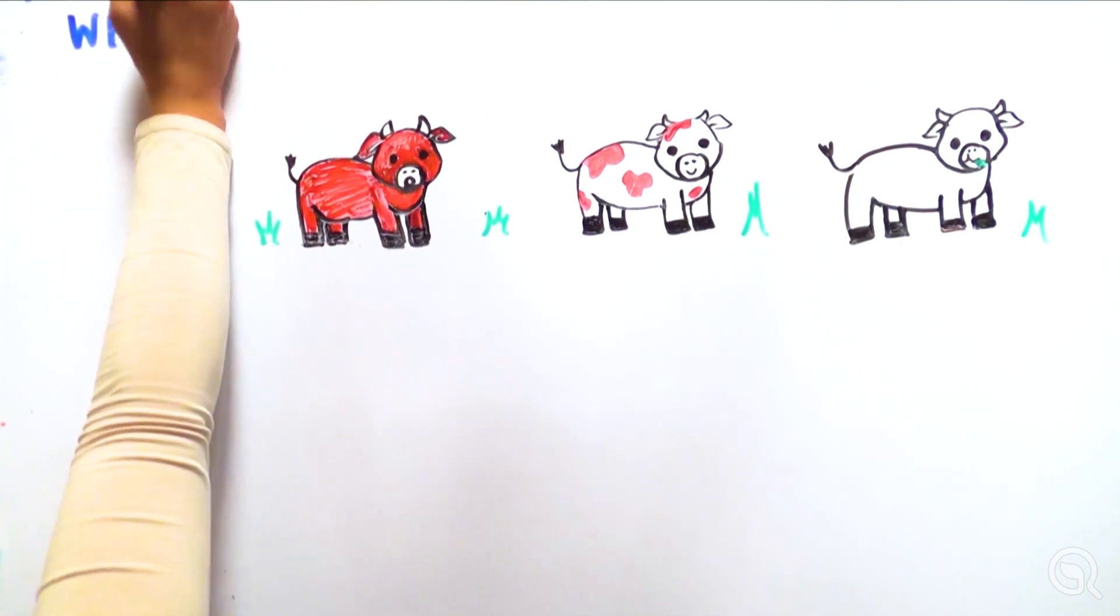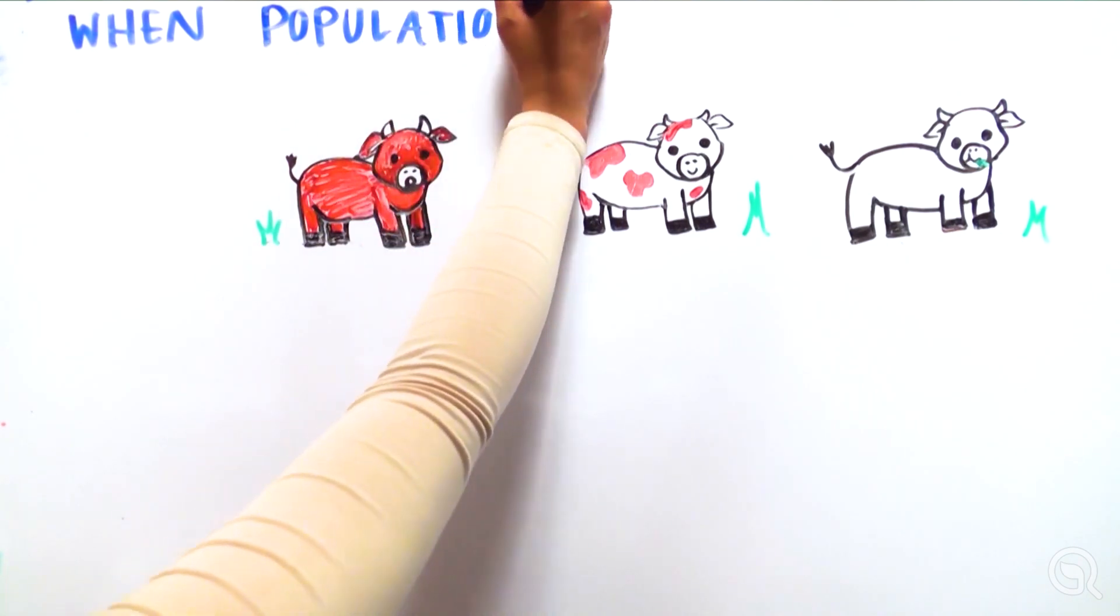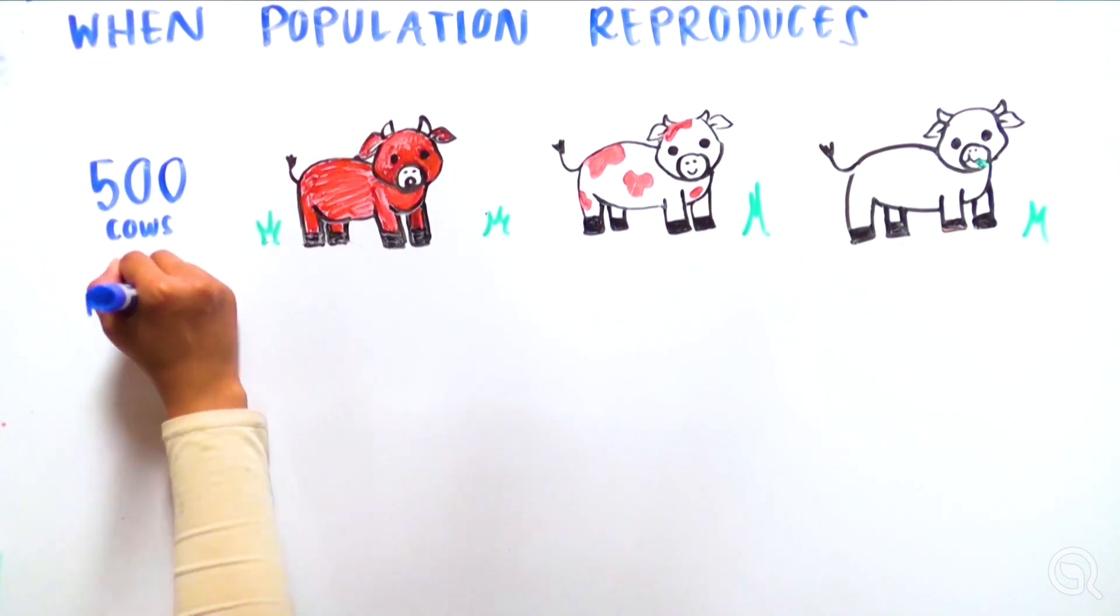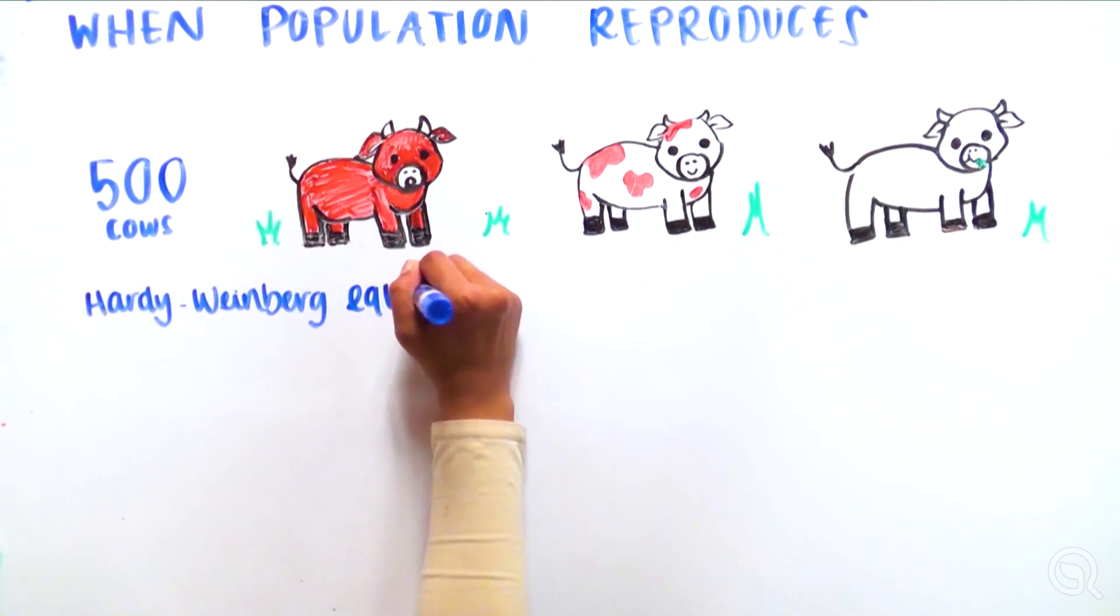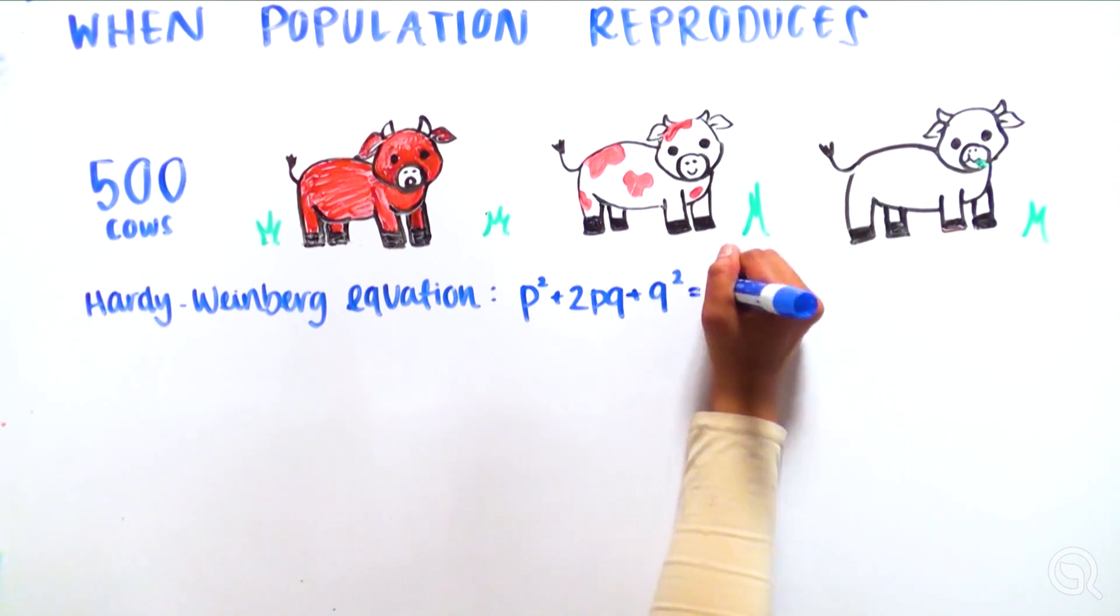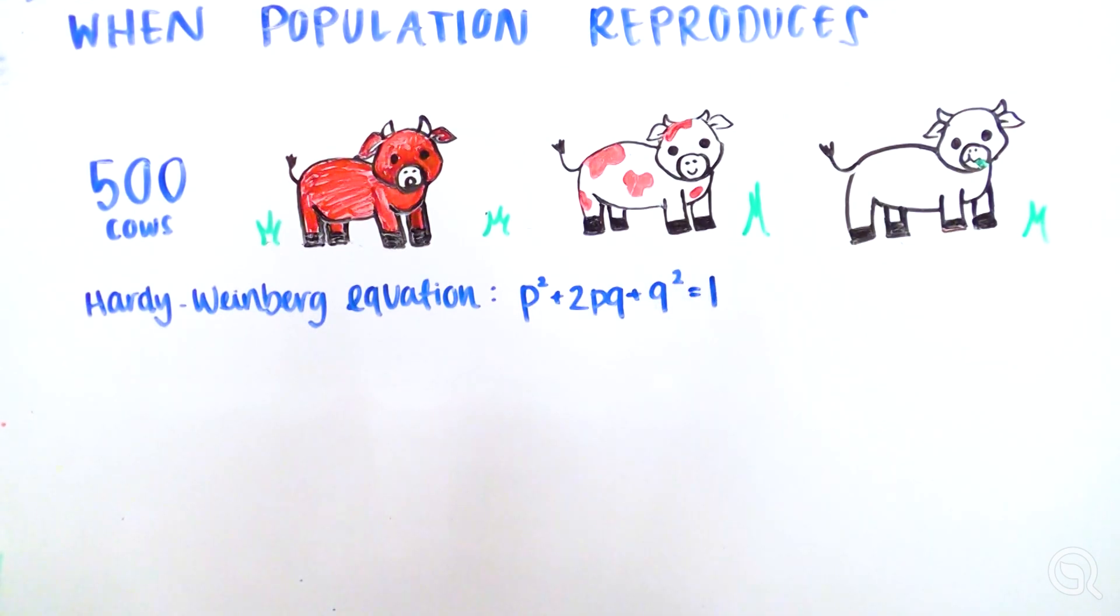Now let's say this population of cattle reproduces and now there are 500 cows. Using the Hardy-Weinberg principle, we can predict what proportion of cows we expect to be in each genotype if the population is in equilibrium. In the previous generation, we had calculated R equals 0.3, W equals 0.7.